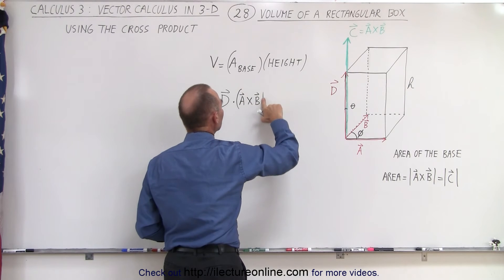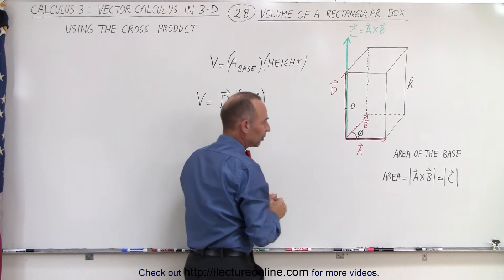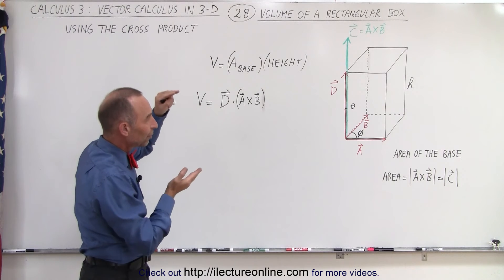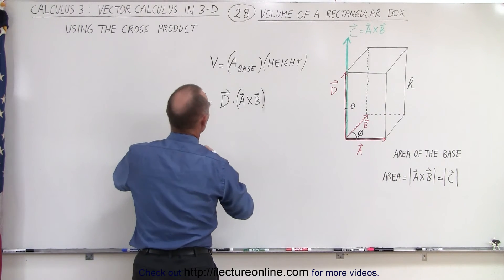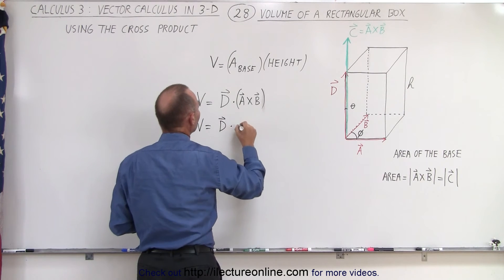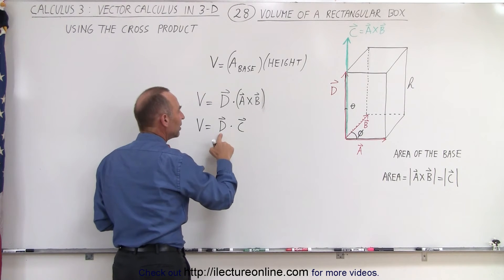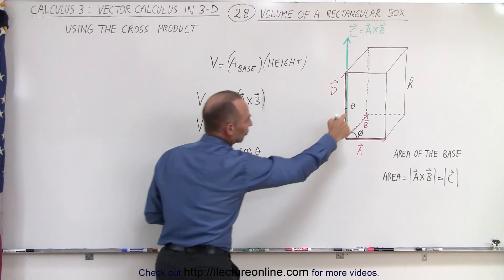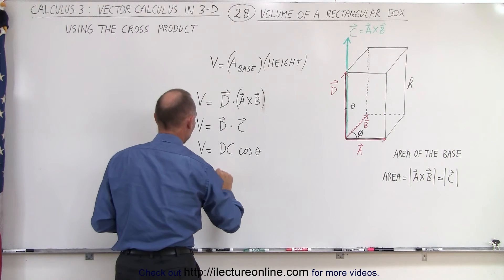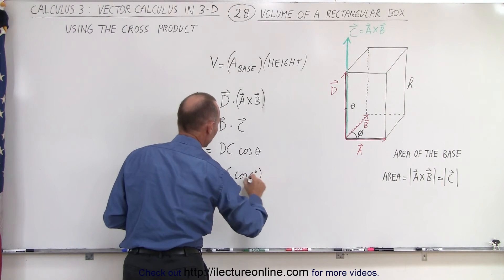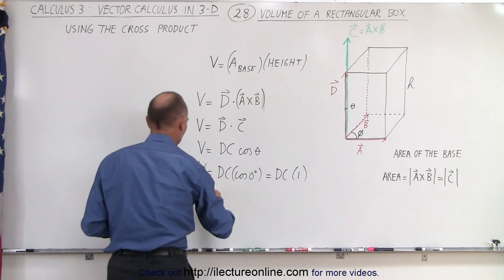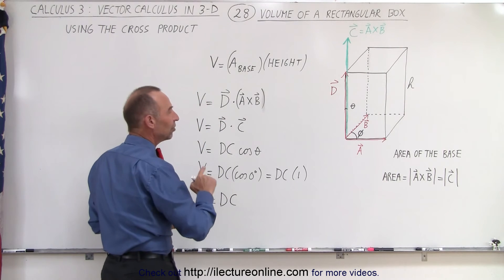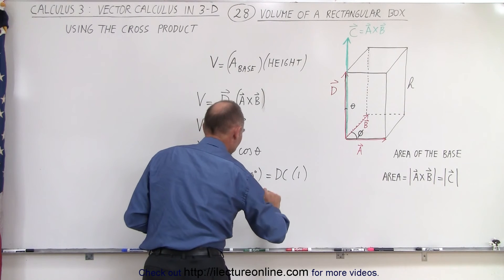If we take the vector A cross B — equal to vector C — and do the dot product between D and C, that gives us the magnitude of C times the magnitude of D times the cosine of the angle between them. So the volume equals D dot C, written as the magnitude of D times the magnitude of C times the cosine of the angle between the two. The angle is 0 degrees, so V equals D times C times cosine(0°), which equals 1. Therefore, the volume equals the magnitude of vector D — the height — times the magnitude of C — the area of the base. This confirms: volume equals height times the area of the base.